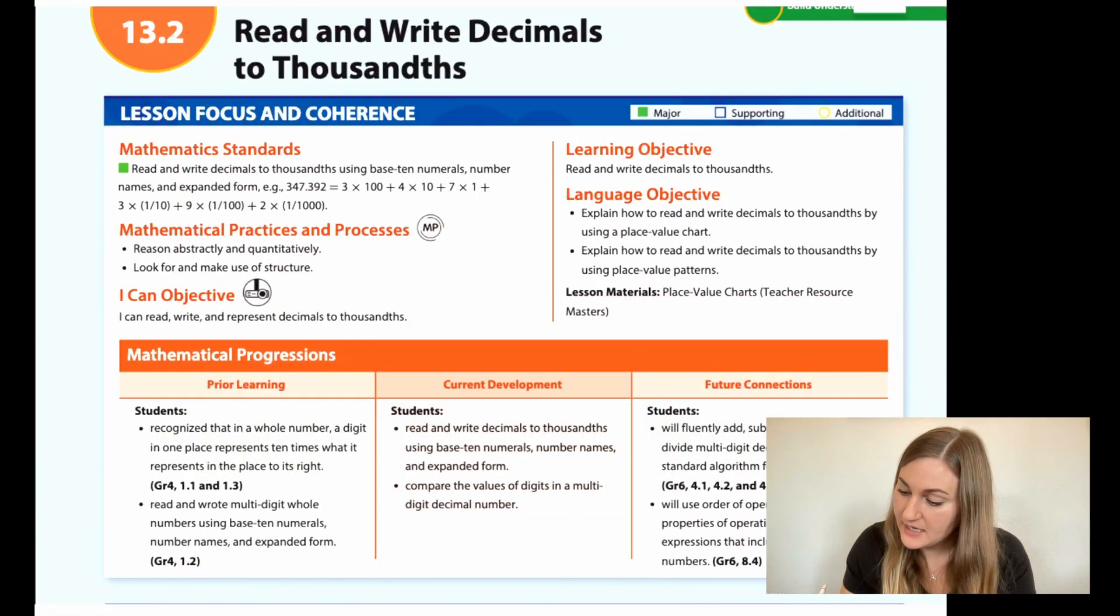I'm going to start off by going over the I can objective. It says I can read, write, and represent decimals to the thousandths. The learning objective is to read and write decimals to the thousandths. Prior learning is that students recognize that in a whole number, a digit in one place represents 10 times what it represents in the place to its right. Students read and wrote multi-digit whole numbers using base 10 numerals, number names, and expanded form.